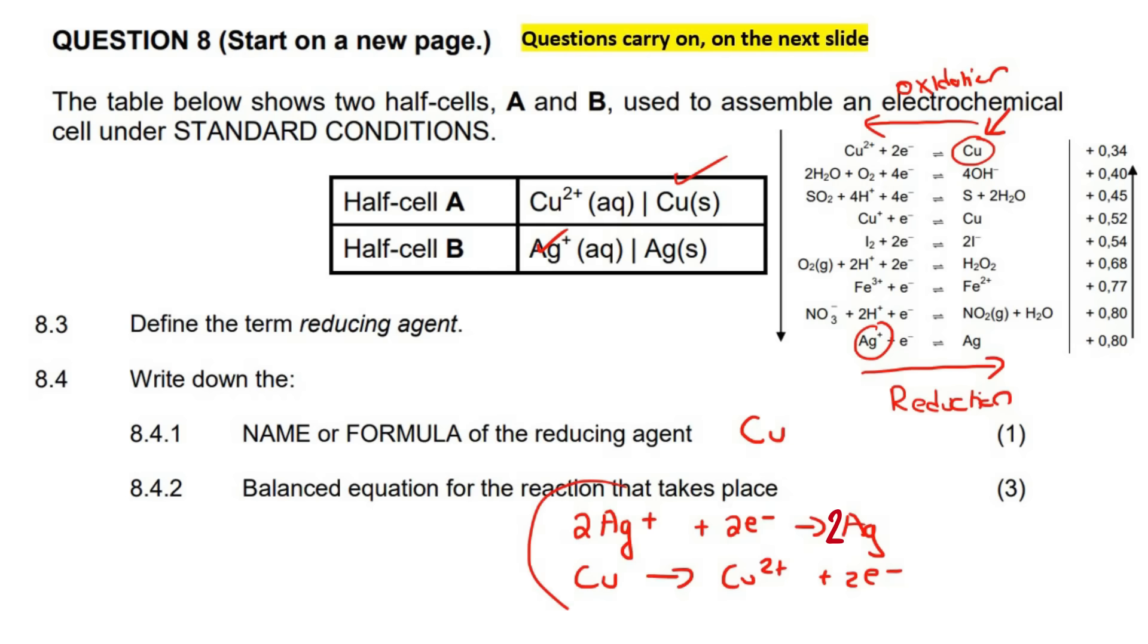So now we can add these two reactions together. So you literally just add them together. So it becomes 2Ag plus plus copper. You see what I'm doing? I'm adding everything that's on the left of the arrow. So that's this and this. I'm not adding the electrons because they are going to cancel out. And then on the other side, it would be 2Ag plus Cu 2 plus.